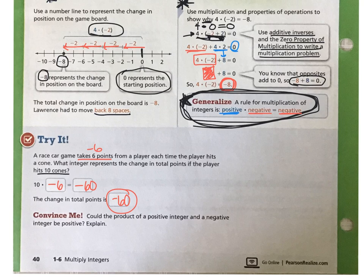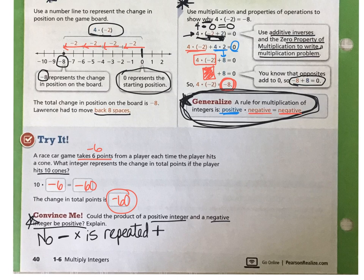Now look at the convince me. Is it ever the case that the product of a positive integer and a negative integer could be positive? And the answer is no. Remember that multiplication is repeated addition. So repeatedly adding a negative number will always produce a negative answer.